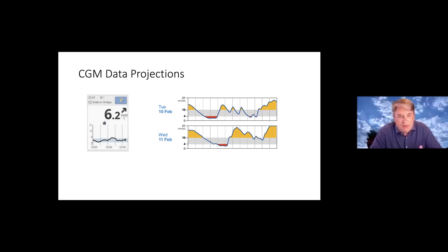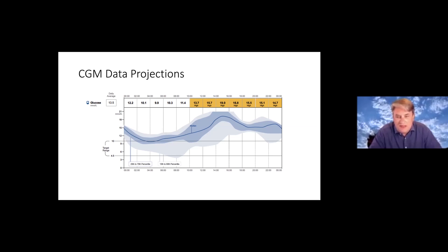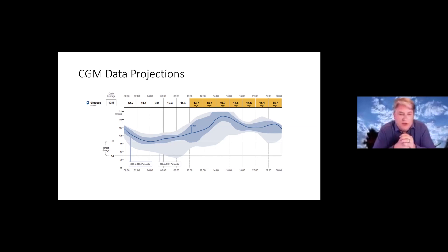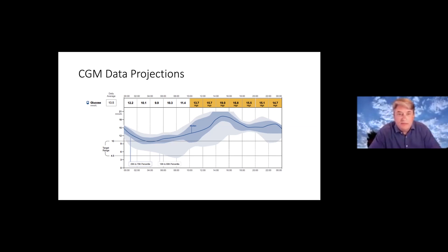What I'm going to talk most about is the ambulatory glucose profile — this summative projection looking usually at around 14 days' worth of data. We can set it as we would like over time, and we're looking at effectively a density map of an individual's experience of glucose at different times of the day over the defined time period.